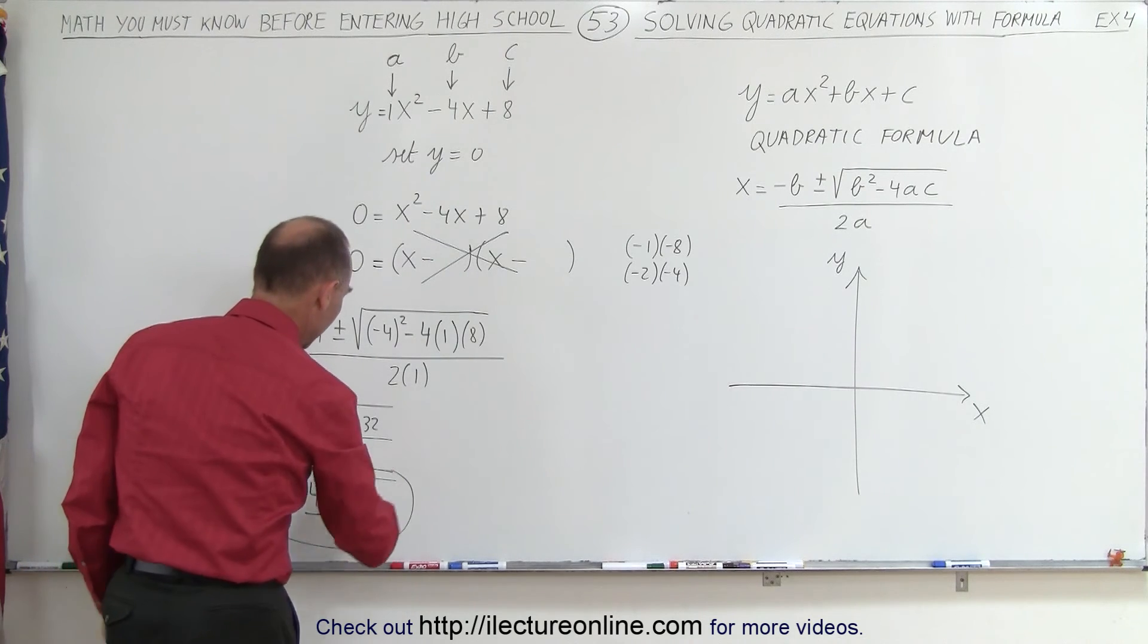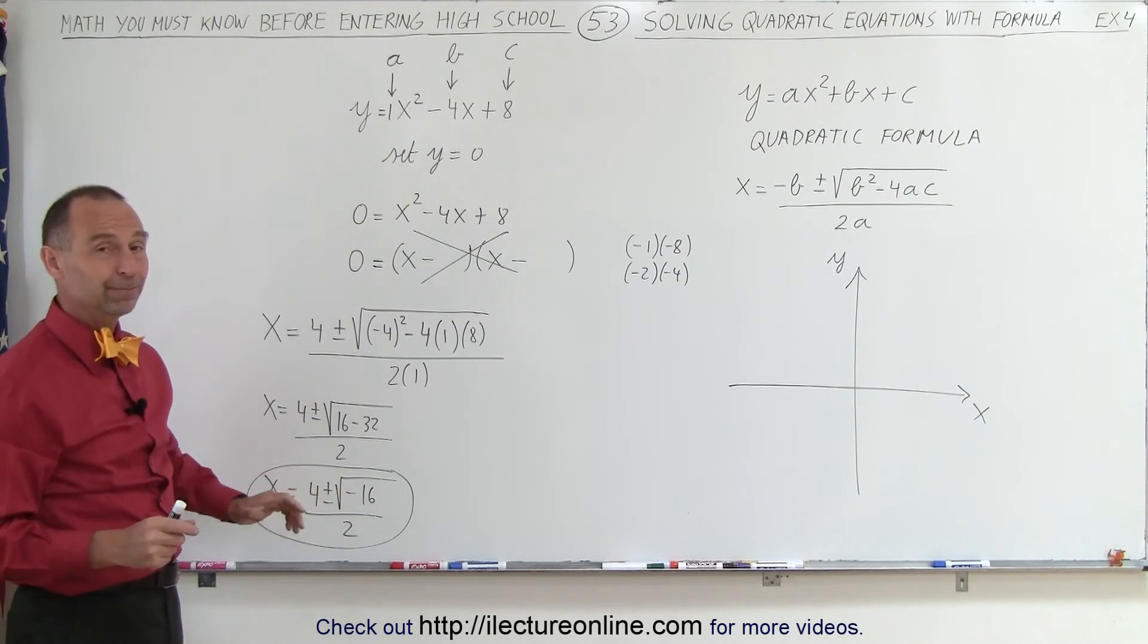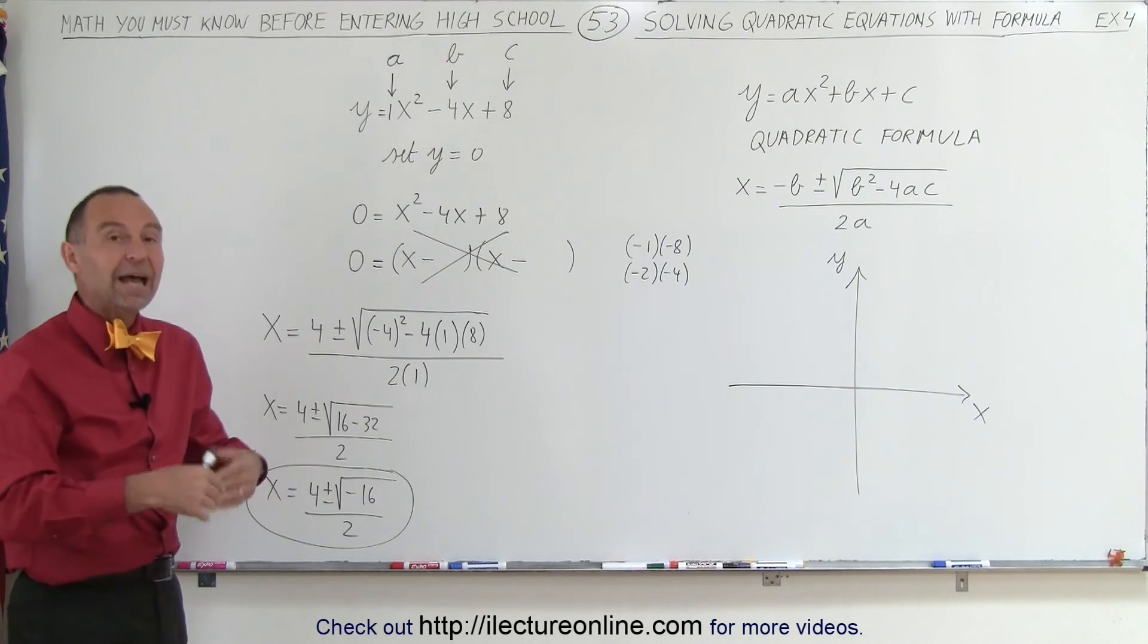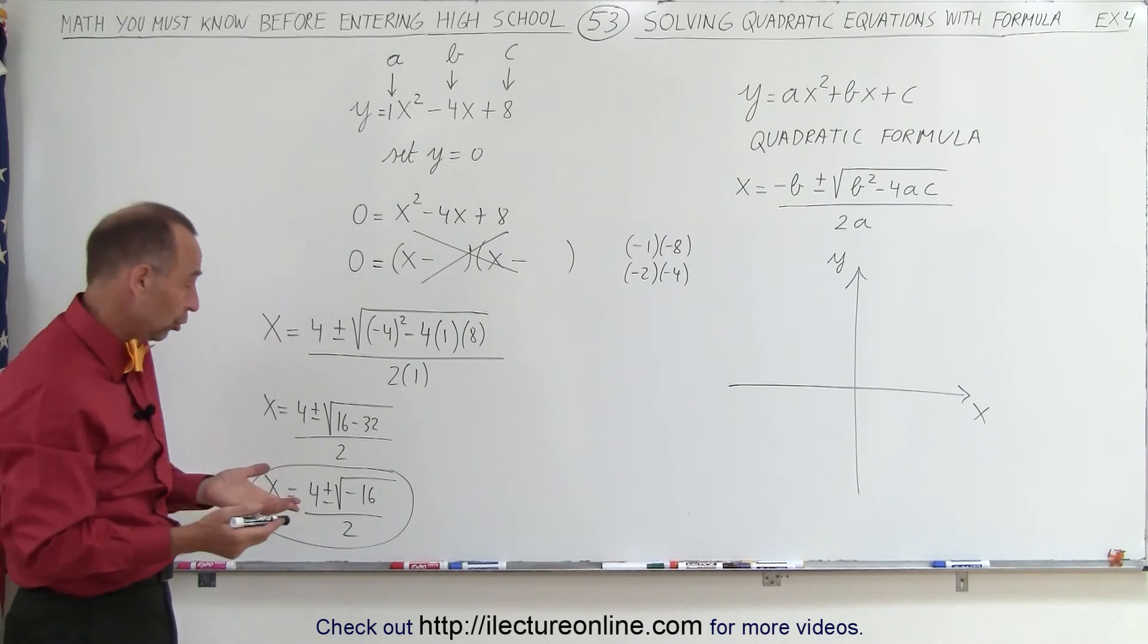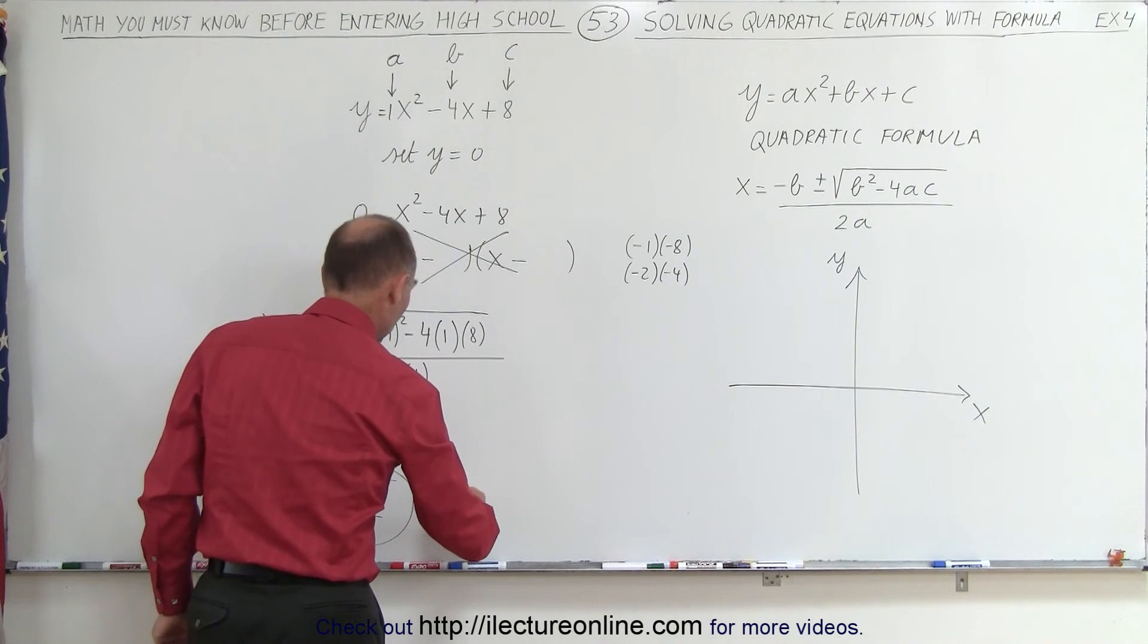Now here we have a problem. We're supposed to take the square root of a negative number. There is no such thing as the square root of a negative number. That would be an imaginary number, not a real number. So therefore, there is no solution to this particular quadratic equation. We can say there is no solution.